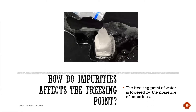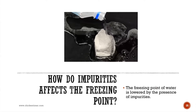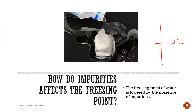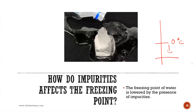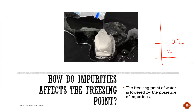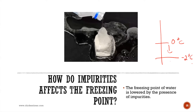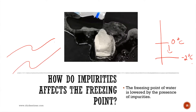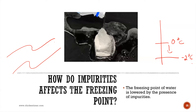Impurities will affect freezing. The freezing point is lowered by the presence of impurities. So if the freezing point was at zero degrees, you can add impurities and bring it down to maybe minus two degrees for freezing.